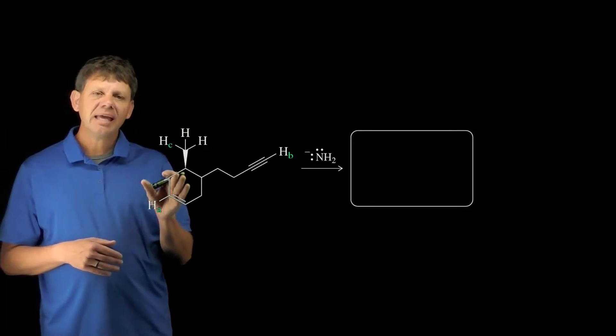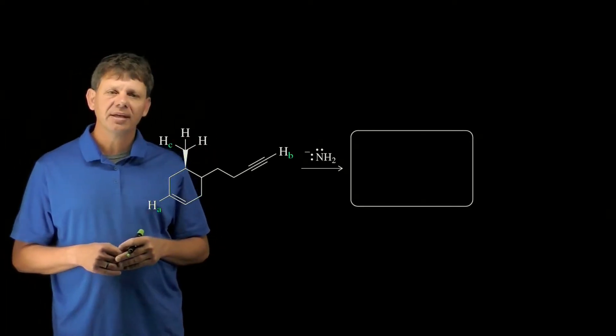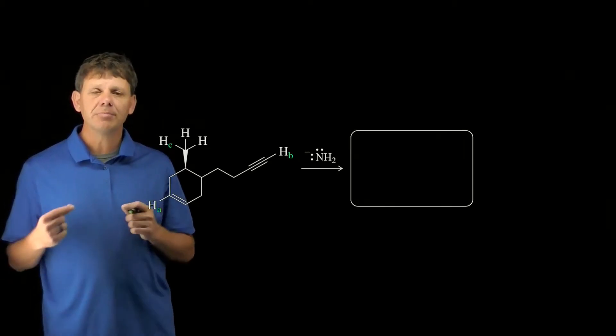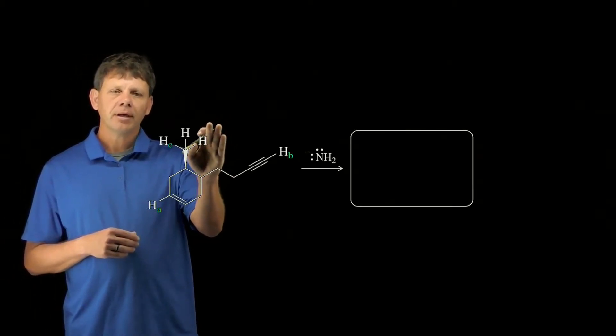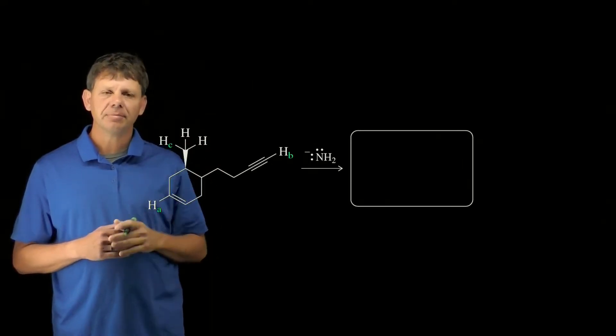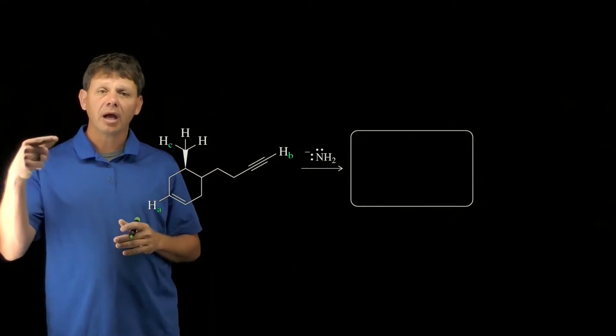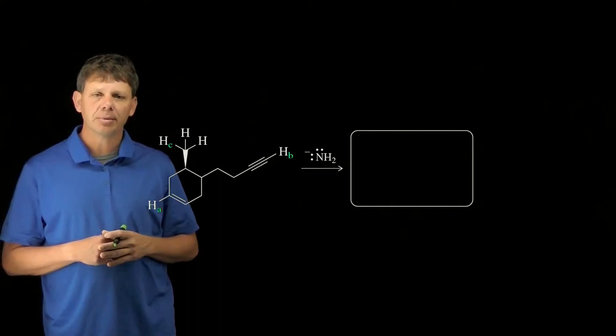In each case, each of the labeled protons is connected to a carbon, with the difference between them being the hybridization. These here in the methyl group are attached to an sp3 hybridized carbon, and so the conjugate base would be sp3 hybridized.